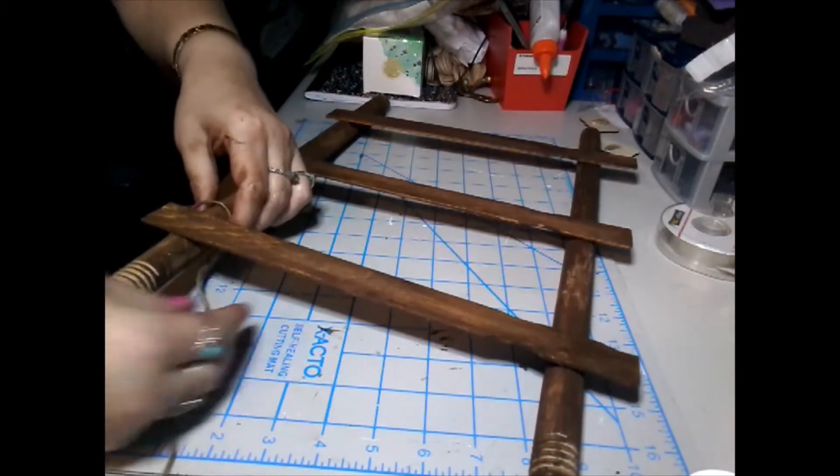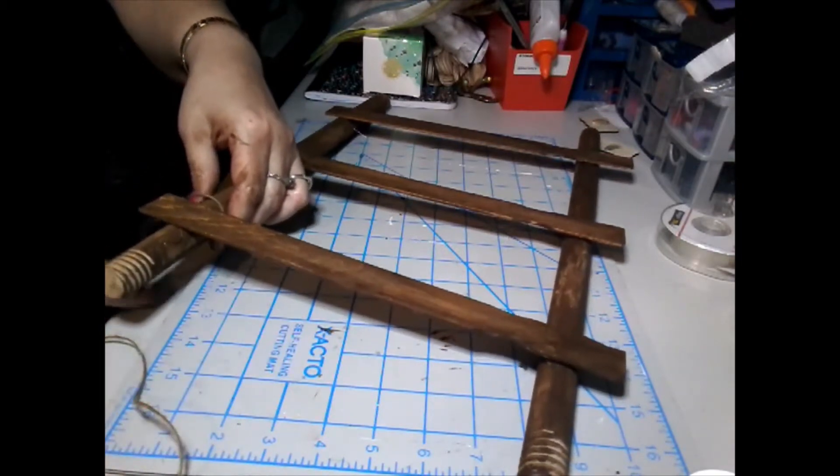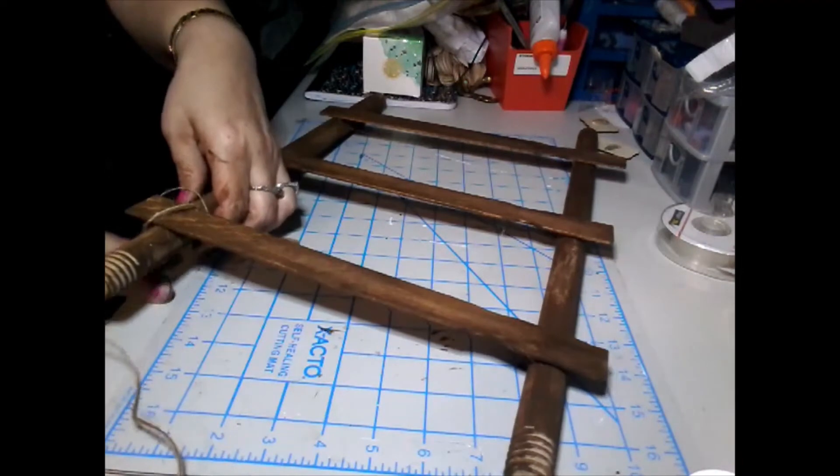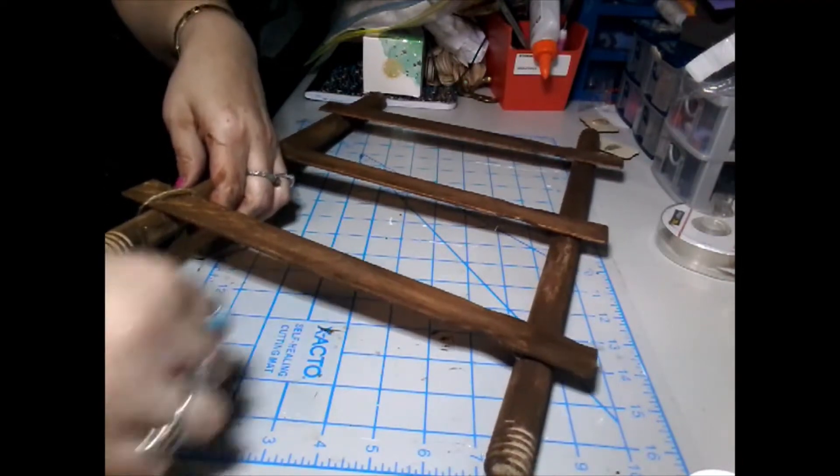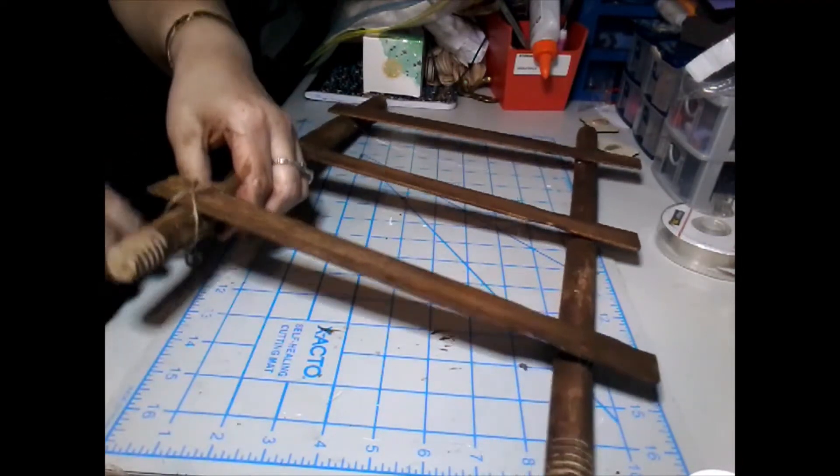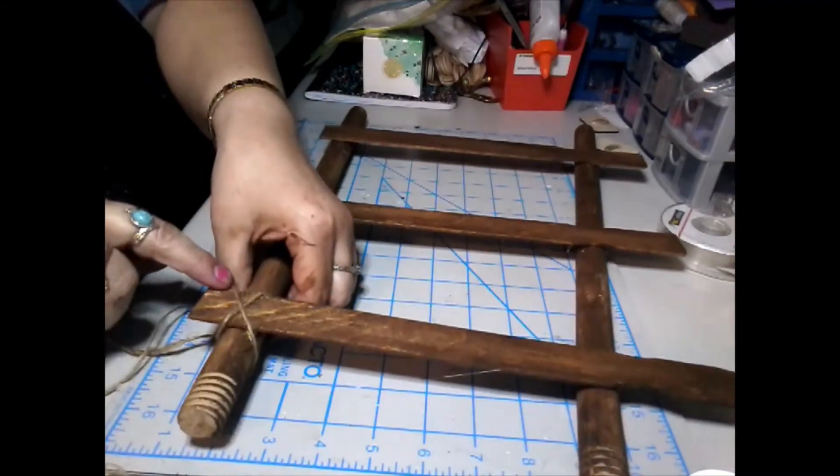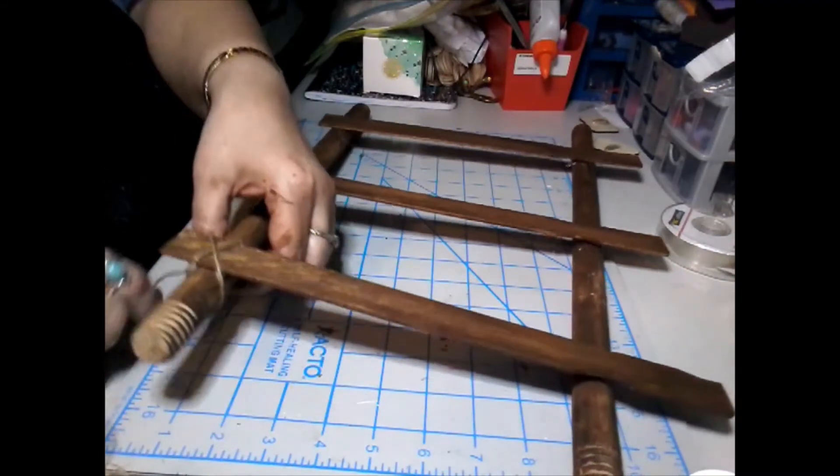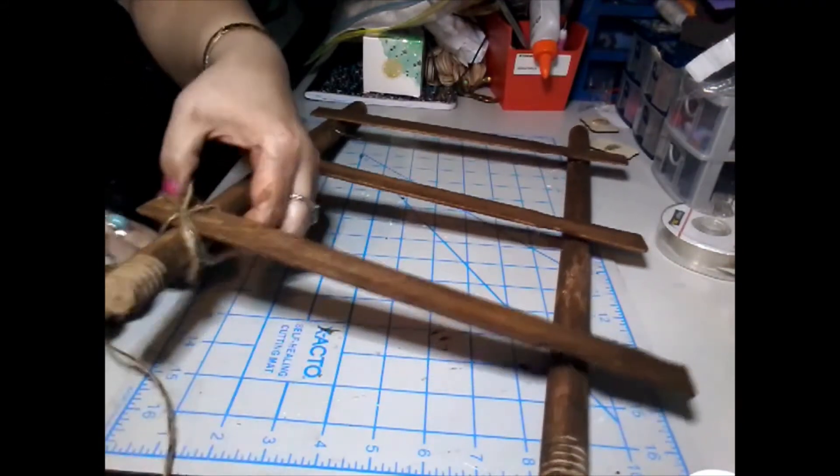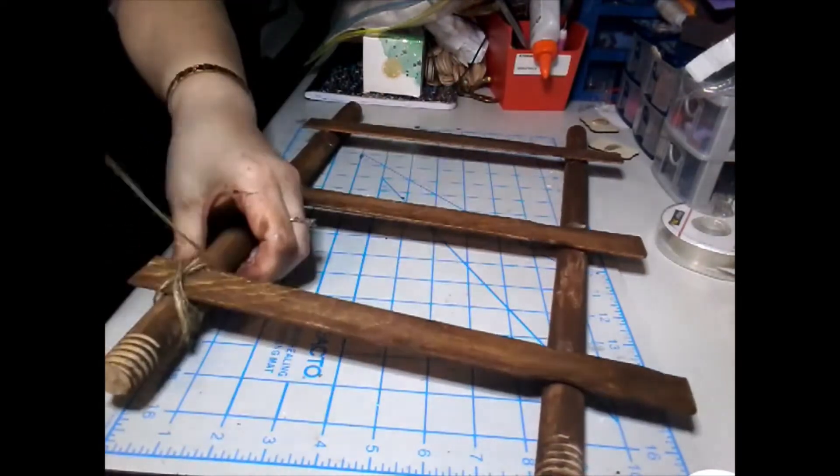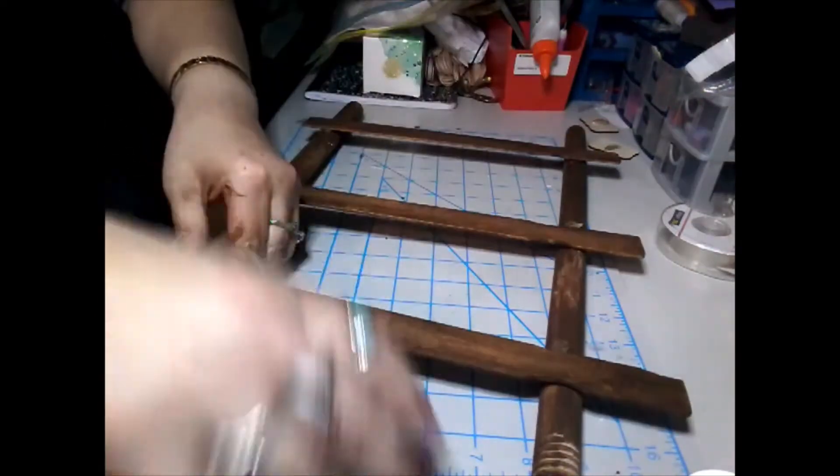We've got it arranged kind of how we want it. I'm going to wrap this around where each paint stir stick meets the plunger stick and I'm going to tie it into an X, as you see, like I'm doing here. I'm going to do that on each corner of the stir stick on both sides of the ladder.